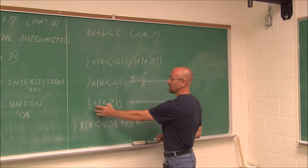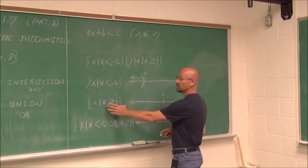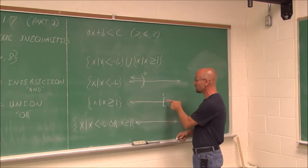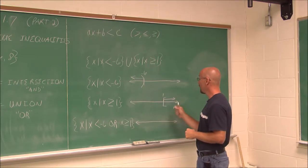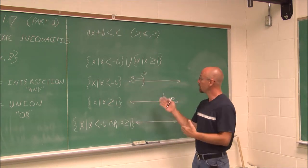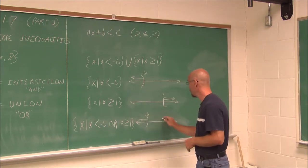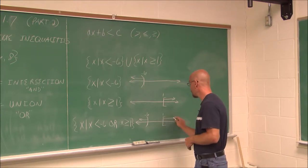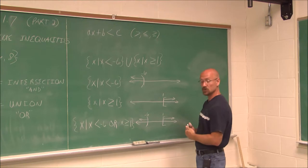For the second set, x such that x is greater than or equal to 1: if 1 is right here, x is greater than or equal to 1, so any value to the right, but it also includes that value, so we use a bracket here. The bracket indicates that it includes the endpoint, and any value to the right would be greater than 1. Putting these two graphs together, we have negative 6 with a parenthesis indicating the endpoint is not included, and a bracket at 1 indicating the value is included. They don't overlap — they go in opposite directions.